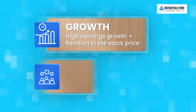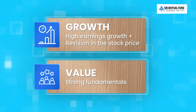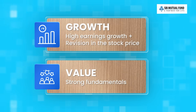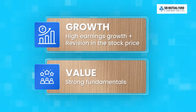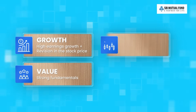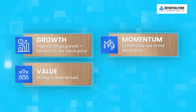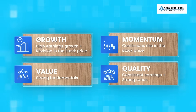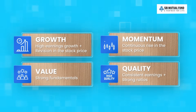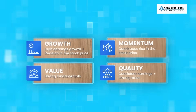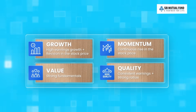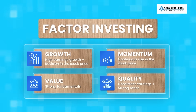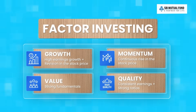Similarly, a company with strong fundamentals which is not being fully reflected in the stock price could be said to have the characteristic of value. A stock which continues to rise could be called a momentum stock, and one with consistent earnings supported by strong ratios could be a quality stock. So when we make groupings of these stocks based on these characteristics, or factors as they are called, it is called factor investing.